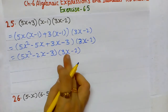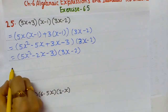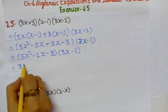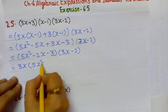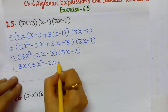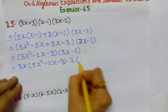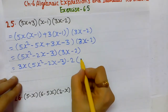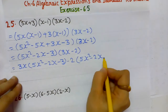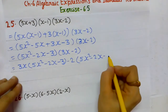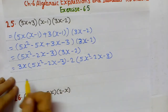Now we again apply the distributive property — breaking the second bracket. We multiply 3x by the first bracket (5x² - 2x - 3), then multiply -2 by the same first bracket.